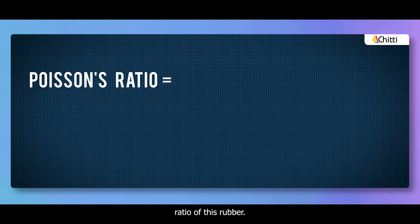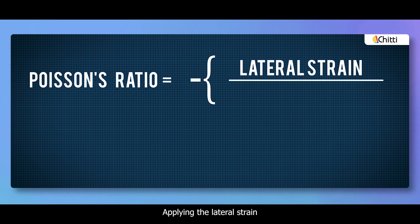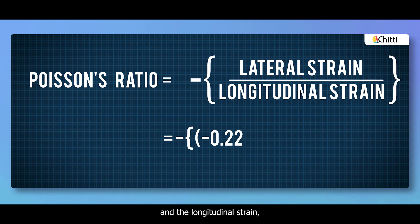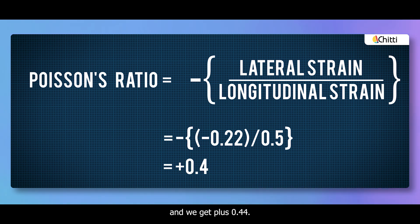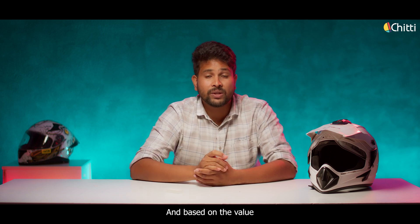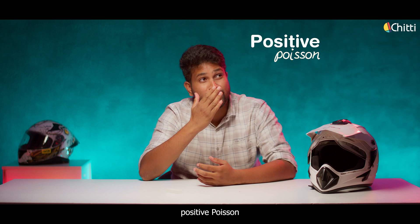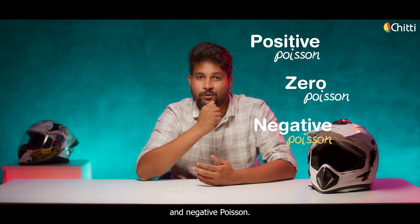Now we have the longitudinal and lateral strain — let's calculate the Poisson's ratio of this rubber. Applying the lateral strain and the longitudinal strain, we get minus of minus 0.22 divided by 0.5. Minus into minus becomes plus, and we get 0.44. That's the Poisson's ratio. For every material, the Poisson's ratio ranges between minus 1 to 0.5, and based on the value, they are categorized as positive Poisson, zero Poisson, and negative Poisson.